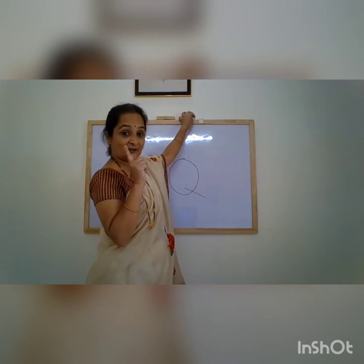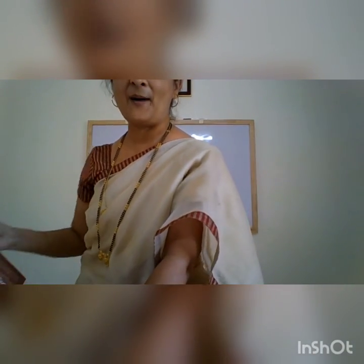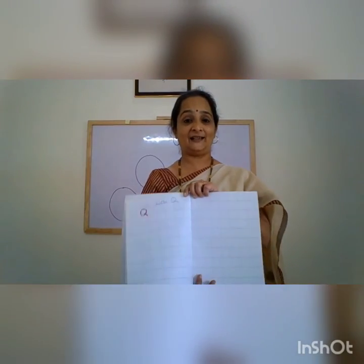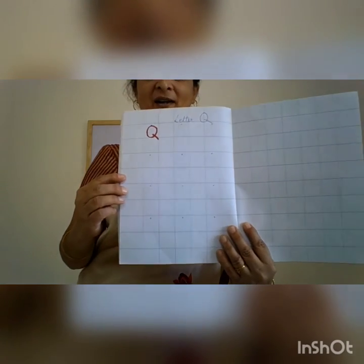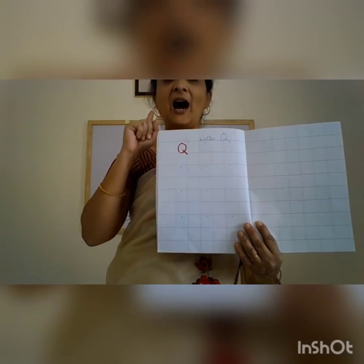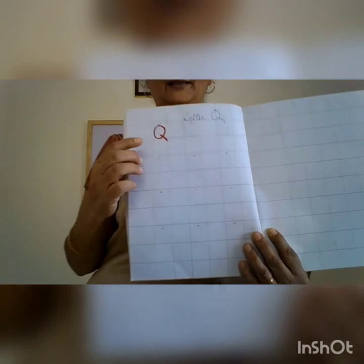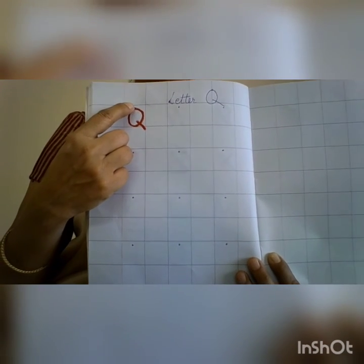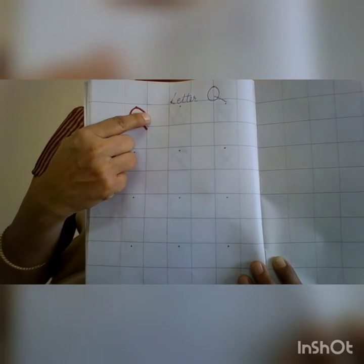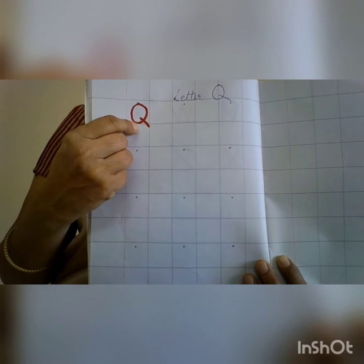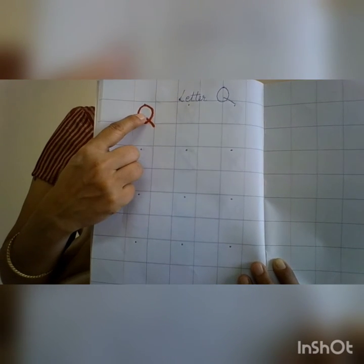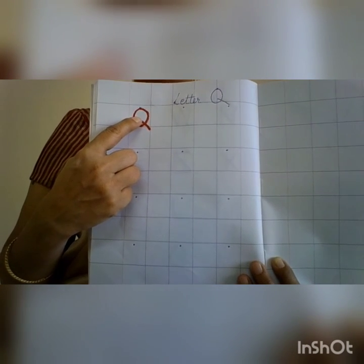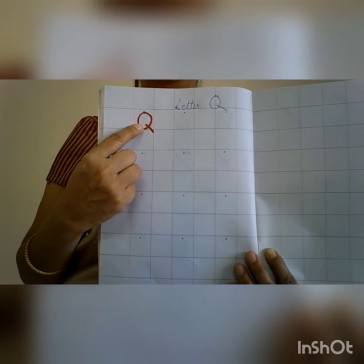So children, don't forget to practice it. Practice by writing it in your notebook. And what do we do when we write in our notebook? We say aloud what we write. Start from up, make a backward curve and go down, then go up again, close the oval. Slanting line from inside out — that is letter Q.